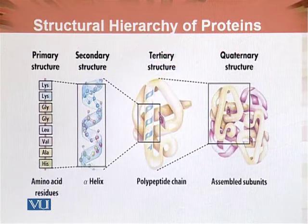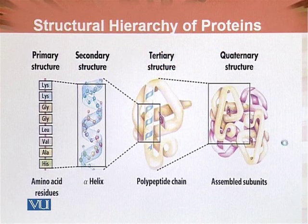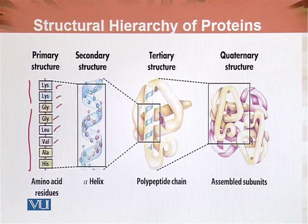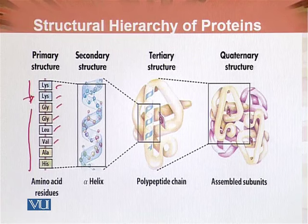This is the diagrammatic presentation of the structural hierarchy of proteins. In primary structure, we can see the amino acid sequence of lysine, lysine, glycine, glycine, leucine, and valine. If this structure changes — if one lysine changes to, say, valine — then the function of this particular protein becomes different.